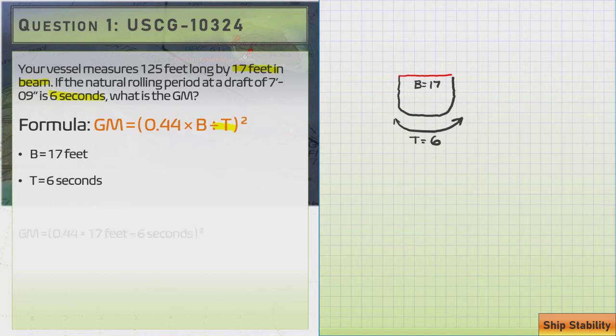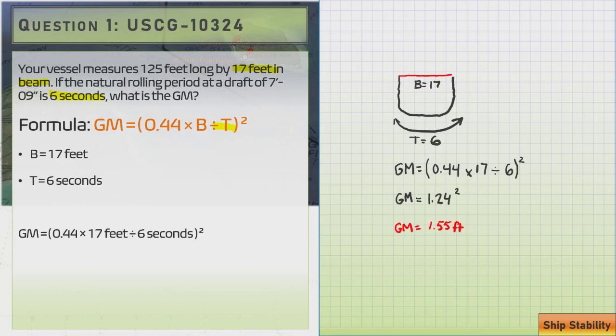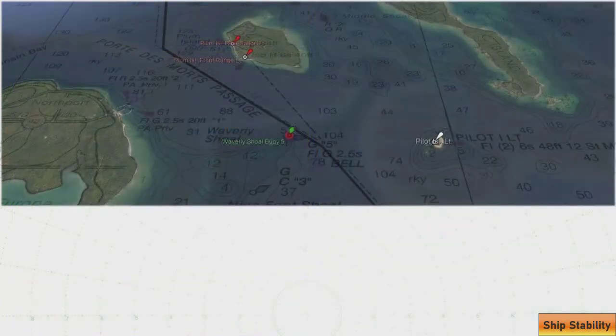Plugging our values into our equation, we can say GM equals 0.44 times 17 feet divided by 6 seconds all squared. So let's write it here in our workspace: 0.44 times 17 divided by 6 squared, which simplifies to 1.24 squared, and that gives us a final value of 1.55 feet being the answer. Okay, let's take another look at another example.